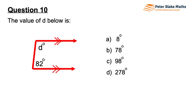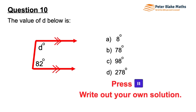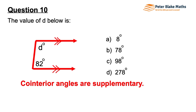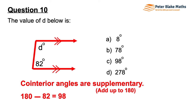Question 10. The value of D in the diagram below is? Co-interior angles are supplementary, adding up to 180 degrees. If we imagine all these lines extended — the top horizontal line to the left, the bottom horizontal line to the left, and the almost vertical line going upwards and downwards — we'd get a traditional parallel lines and transversal diagram. Then we can recognize more clearly that D and 82 are in co-interior positions, so they add up to 180 degrees. So we do 180 minus 82, giving a D value of 98 degrees.